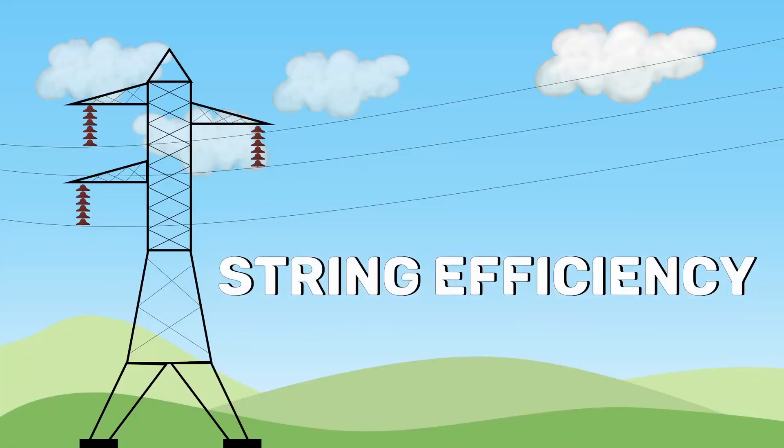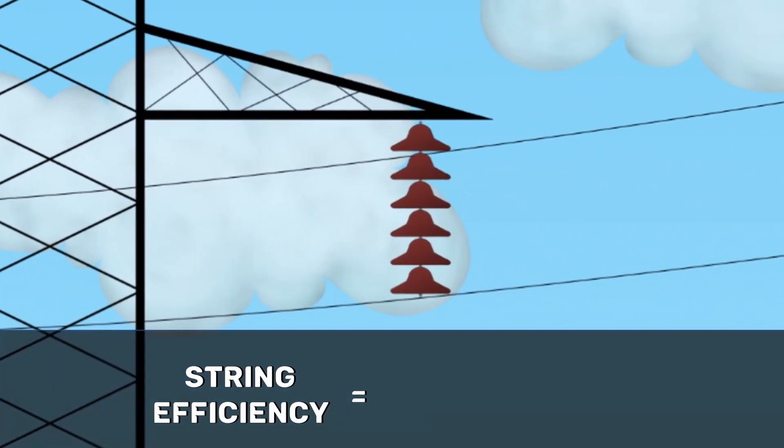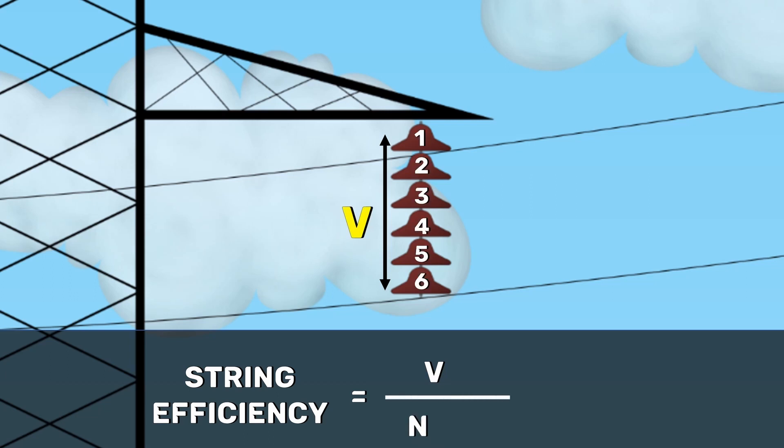we need more uniform distribution of voltages that is usually expressed in terms of string efficiency. It is the ratio of voltage across the whole string to the product of a number of discs and the voltage across the disc nearest to the conductor.